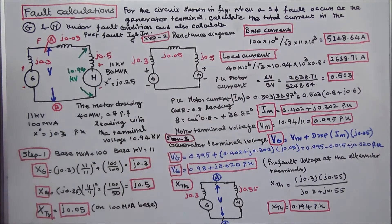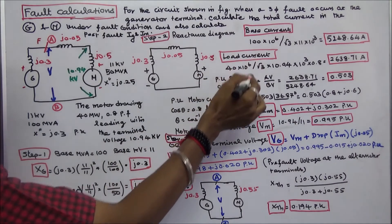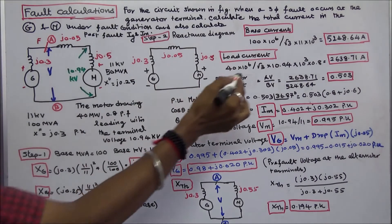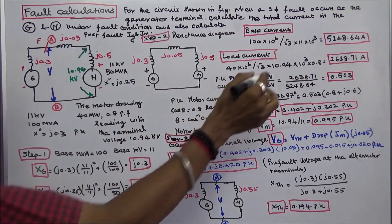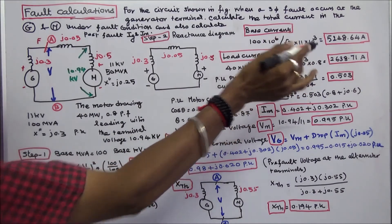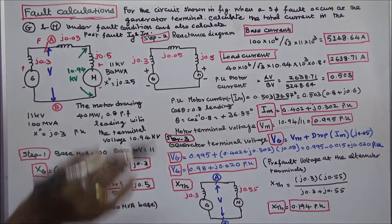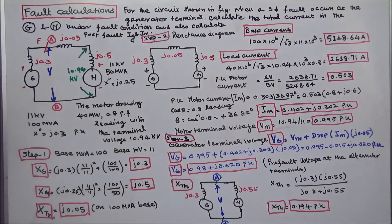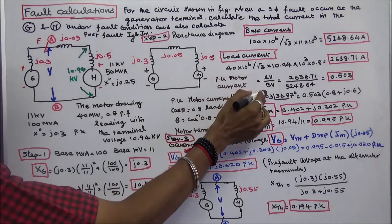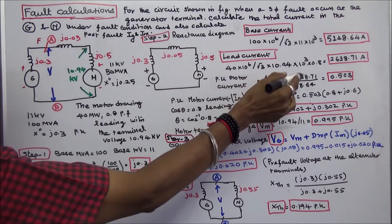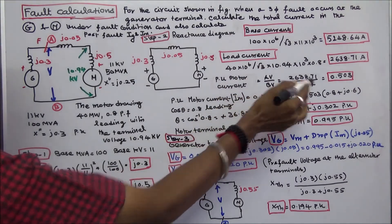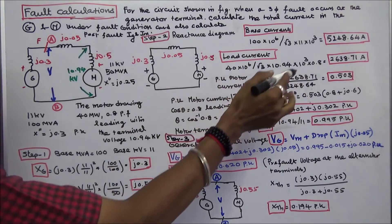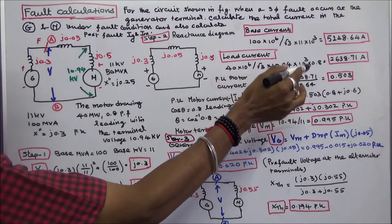Load current equals 40 MW given: 40 × 10⁶ divided by (√3 × 10.94 × 10³ × 0.8 power factor), which equals 2638.71 amps. Now we calculate per-unit motor current: actual value divided by base value = 2638.71 / 5248.64, therefore per-unit motor current is equal to 0.503.